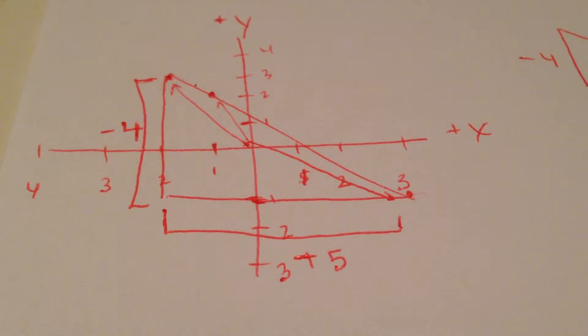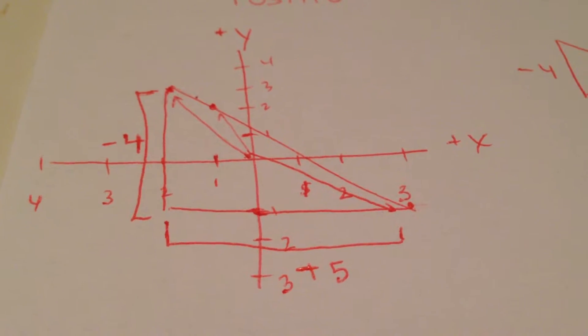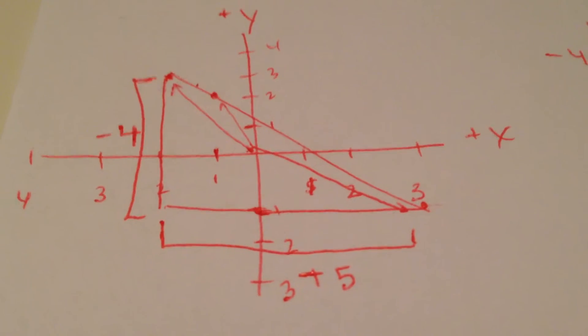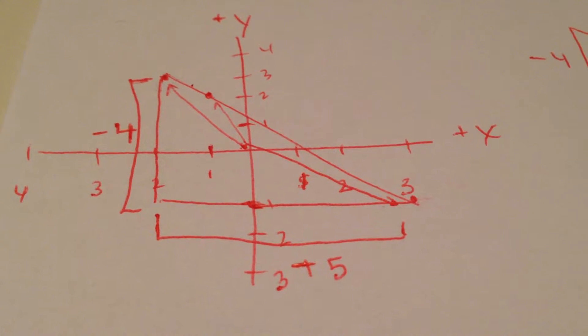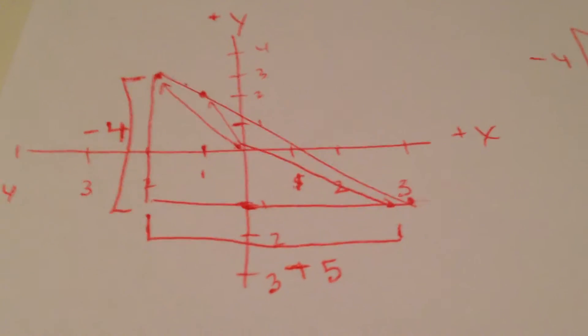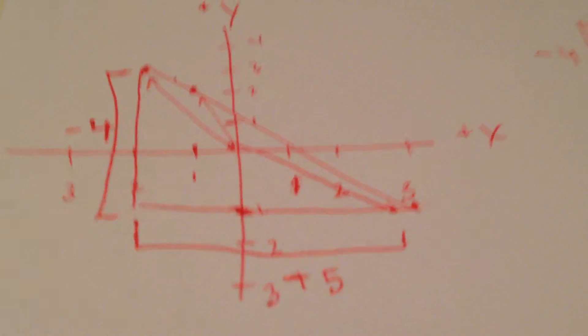So your displacement from your starting point which is over here to your ending point which is over here is negative 4 in the y direction and you move to positive 5 meters in the x direction, in the positive x hat direction.